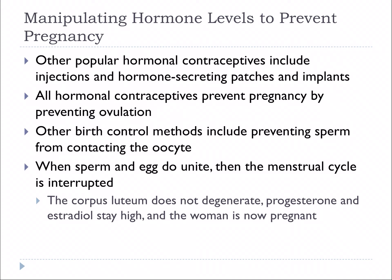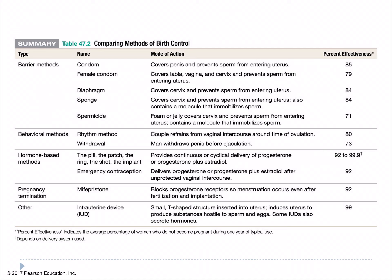Other birth control methods include preventing sperm from contacting the oocyte through barrier methods like condoms. When sperm and egg do unite, the menstrual cycle is interrupted — the corpus luteum does not degenerate. That means levels of progesterone and estradiol stay high, meaning the woman is pregnant, and she'll keep that thick endometrial lining to support the developing baby.